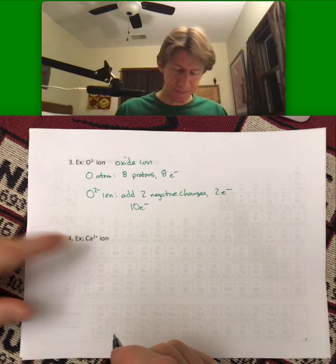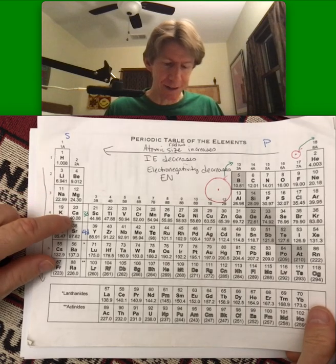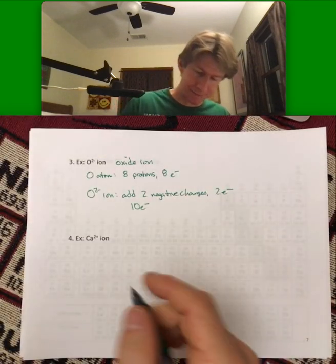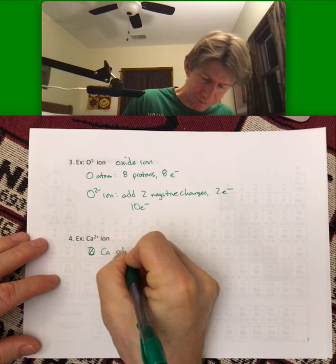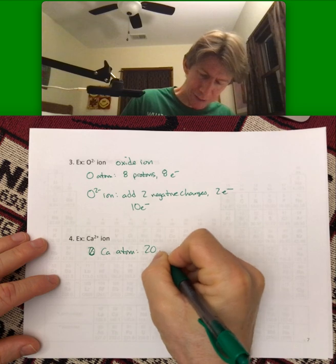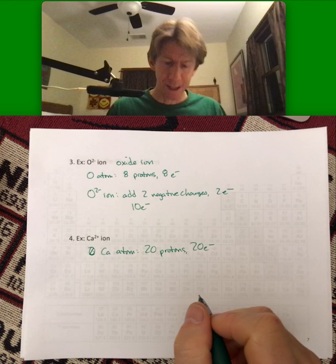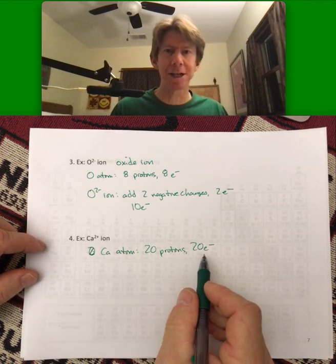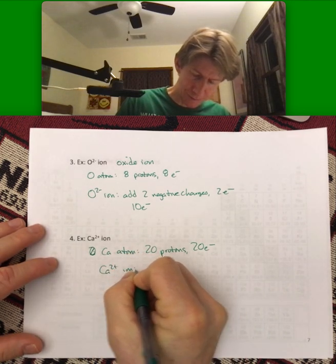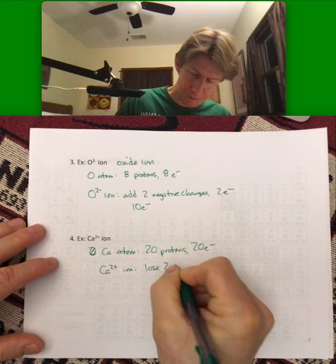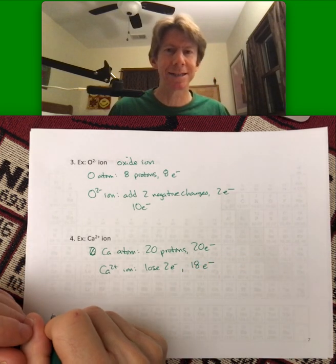Calcium ion. 2 plus charge. Let's look at calcium. Calcium is right here. It has 20 protons. So again, calcium atom. 20 protons. 20 electrons. Calcium 2 plus. Well, if it's going to be 2 plus, it's going to lose 2 electrons. And we have only 18 electrons.